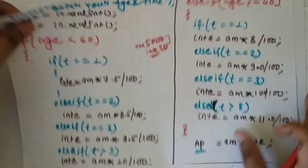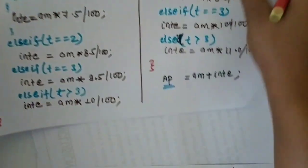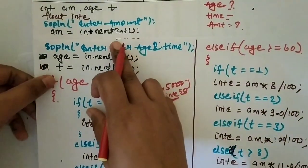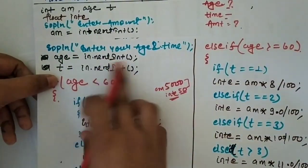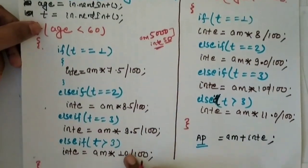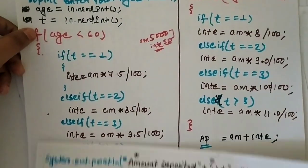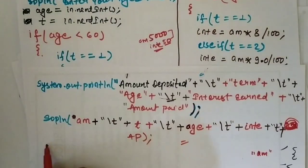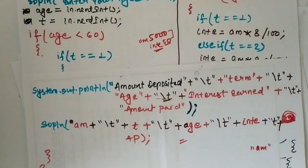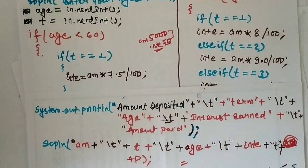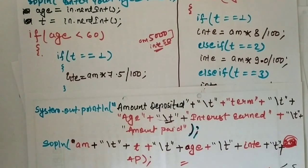This was our complete program. We covered amount, age, and time input, then the logic for when age is less than 60 and the appropriate interest method. This completes today's question. If you like the video, please like, share, and comment. Subscribe and hit the bell icon to get notifications. Thank you.